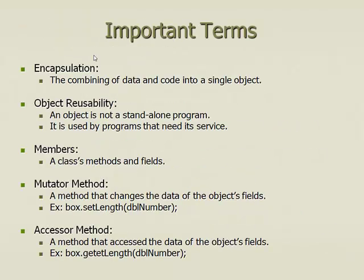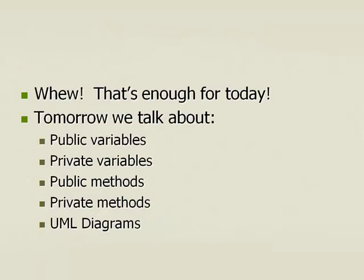Here are some important terms. Encapsulation is the combining of data and code into a single object — like that graphic representation from earlier. Object Reusability is being able to reuse code over and over again. Members are classes, methods, and fields. Mutator methods are the same as a setLength method. An Accessor method is the same as a get method. In the future, we're going to talk about public variables, private variables, public methods, private methods, and UML diagrams. Thanks for tuning in — if any of this didn't make sense, please review it and look at that demonstration we did.